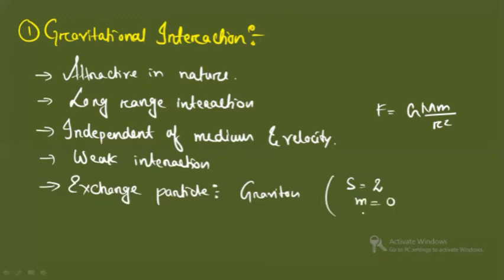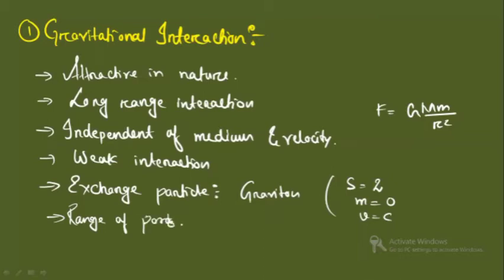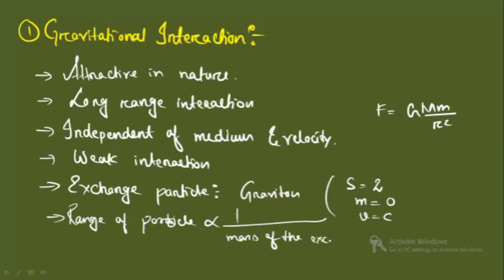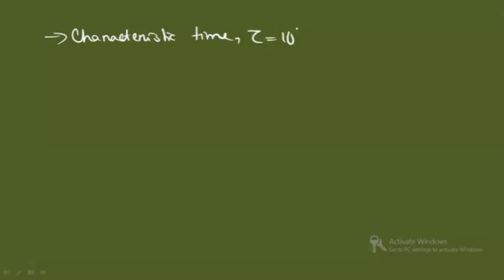The range of a particle is proportional to one divided by the mass of the exchange particle — this is an important point to note. The characteristic time for gravitational interaction, denoted by τ, is equal to 10 to the power 16 seconds.